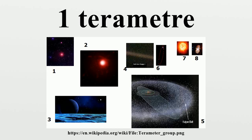1.97 terameters, 13.2 astronomical units — revised estimated diameter of VY Canis Majoris. The newly improved measurement was 30% lower than the previous 2007 estimate. 2.0 terameters, 13.4 astronomical units — diameter of one of the largest known stars, KY Cygni.